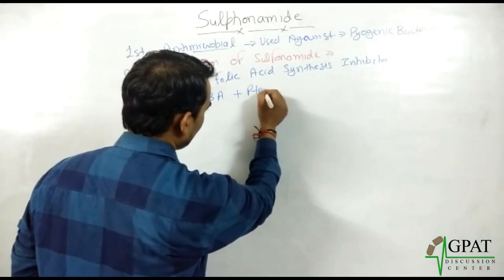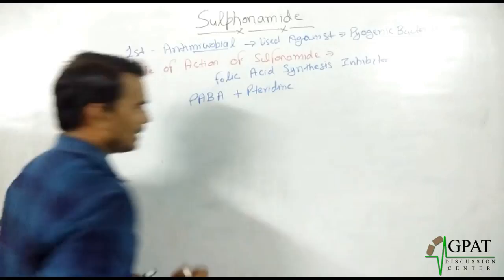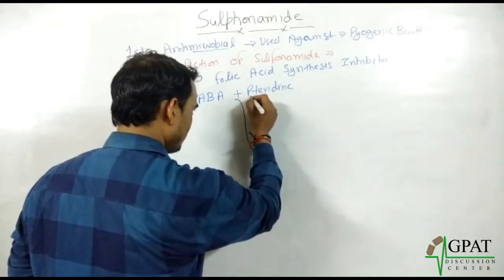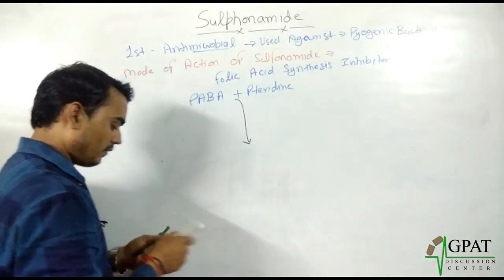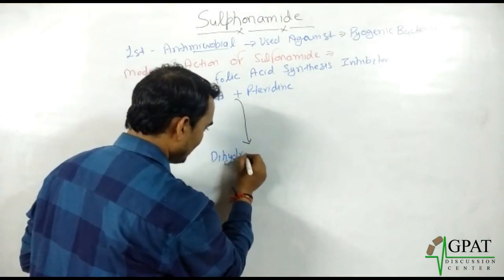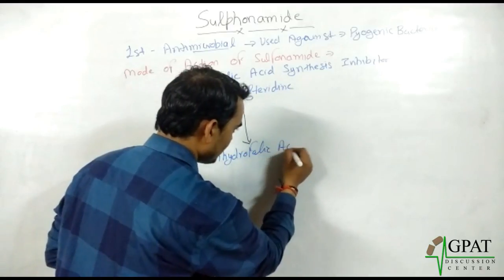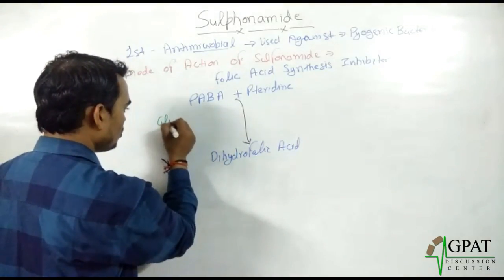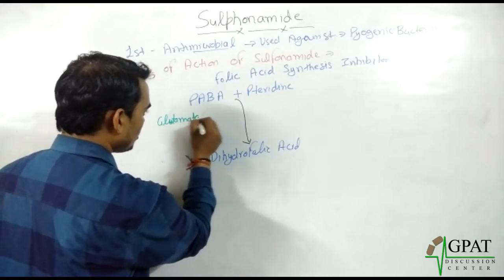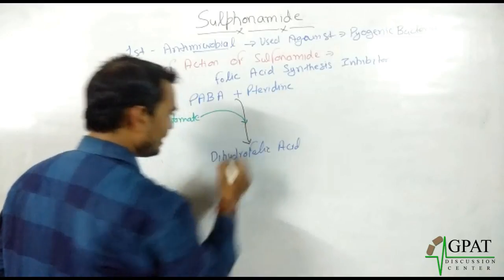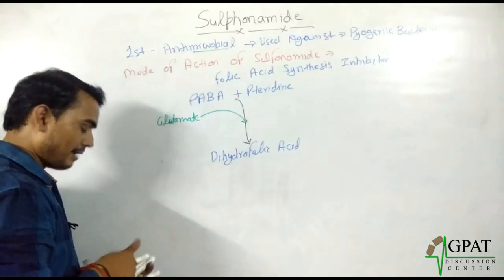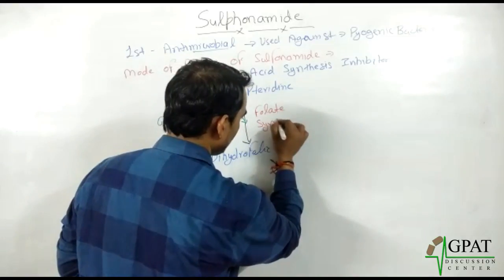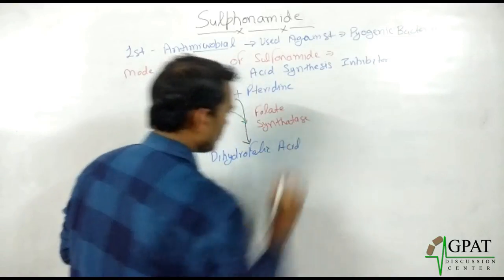In microorganisms, folic acid is synthesized from PABA plus pteridine. These get combined, and in the presence of glutamate, they form dihydrofolic acid. This reaction is catalyzed by the enzyme folate synthetase.